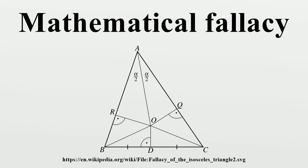By AAS, triangle RAO ≅ triangle QAO. By RHS, triangle ROB ≅ triangle QOC. Thus, AR equals AQ, RB equals QC, and AB equals AR plus RB equals AQ plus QC equals AC.